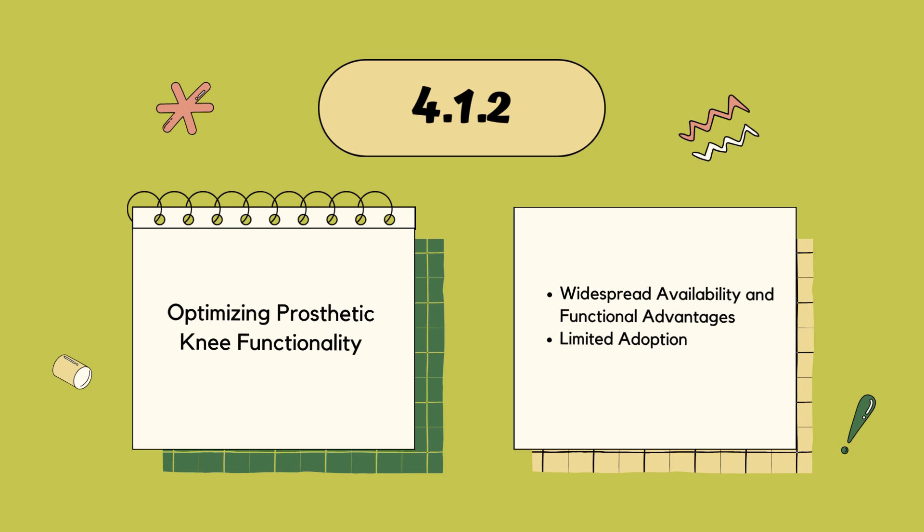Let's look at the optimization of the prosthetic knee functionality through kinematic analysis, alignment strategies, and prescription guidelines for four-bar linkage mechanisms. The widespread availability of four-bar linkage knees offers functional advantages to individuals with transfemoral amputations, but their adoption remains limited — possibly because prescribers are not familiar with or do not fully understand the four-bar linkage. This study aims to elucidate the kinematics of various four-bar mechanisms and delineate the disparities and prescription criteria among three distinct classes of four-bar linkage mechanisms for amputees, helping to choose the most suitable mechanism to prescribe to patients.